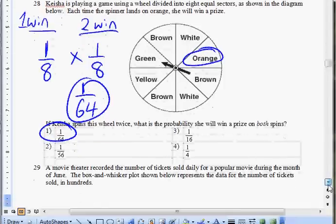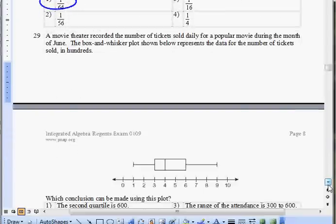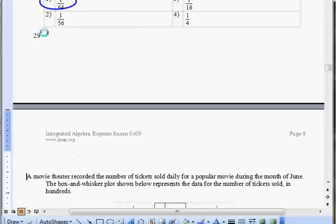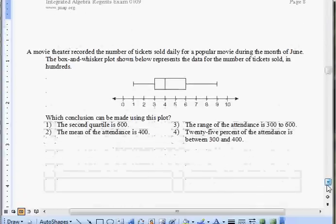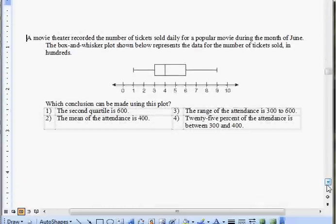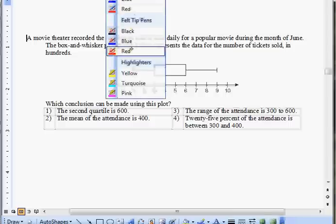Number 29: A movie dealer records the number of tickets sold daily for a popular movie during the month of June. The box-and-whisker plot shown below represents the data for the number of tickets sold in hundreds. What conclusion can you make from this plot? Choice one: The second quartile is 600. The second quartile is over here—that's 400, so it's not choice one.